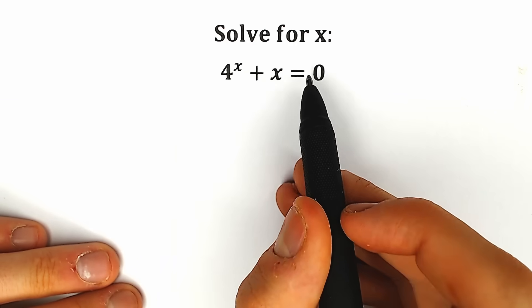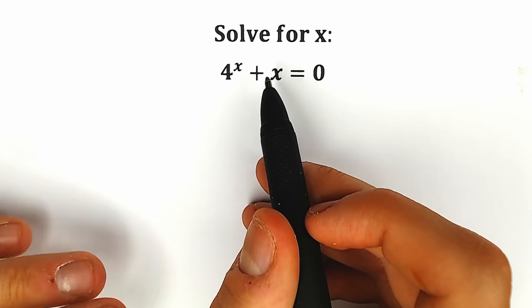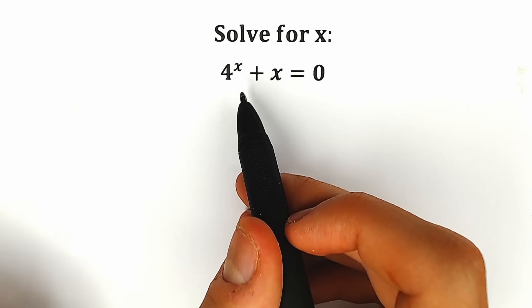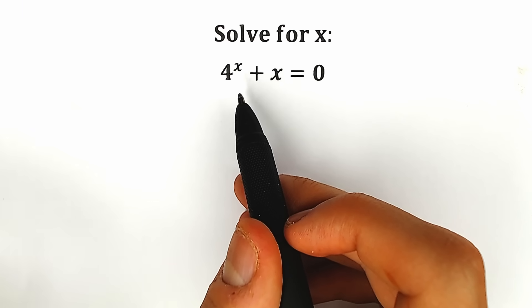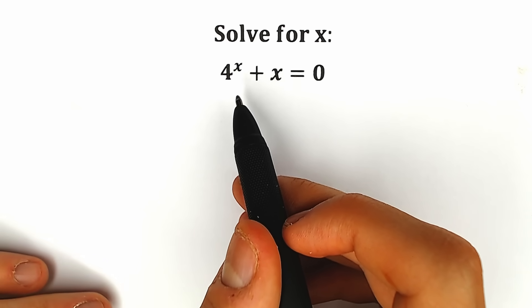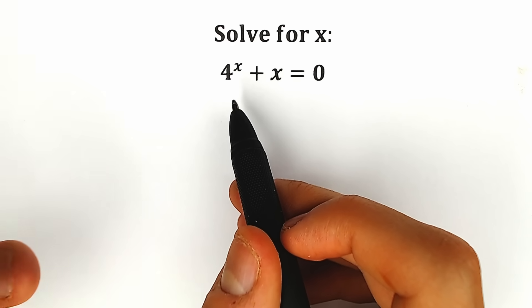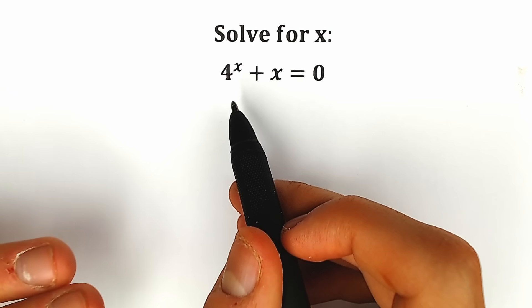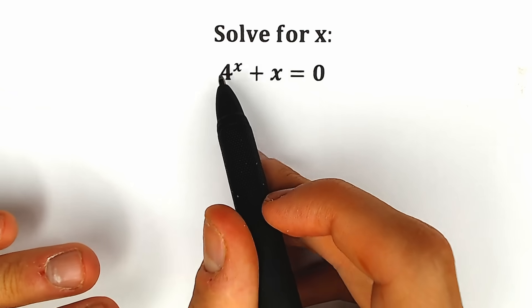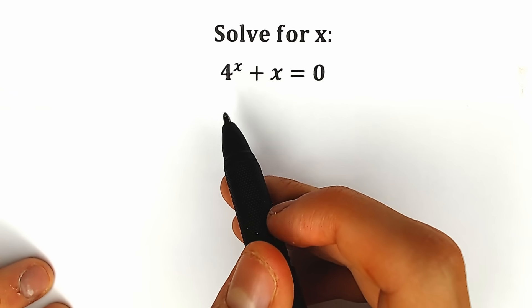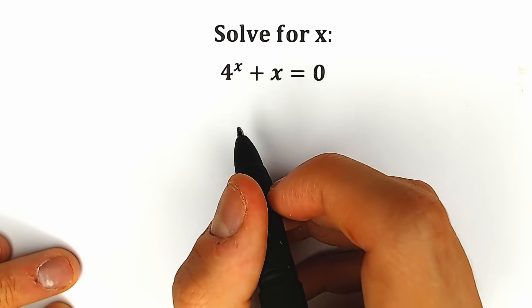4 to the x plus x equals 0, and we need to find x. If you have your solution, your answer, you can write it down into the comment section and in a few minutes we will check your answer. This is a very interesting question, so you can also write your assumption and solution down into the comment section.